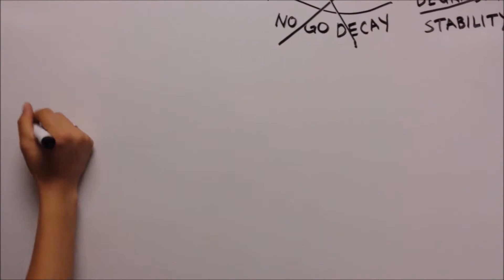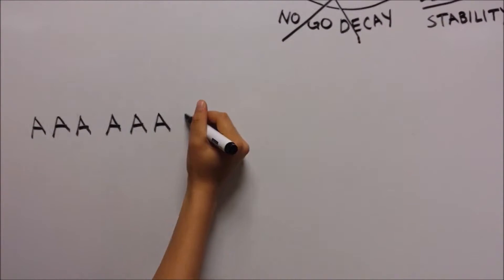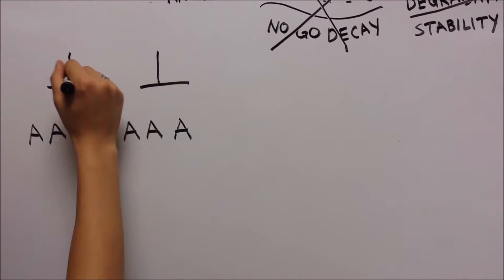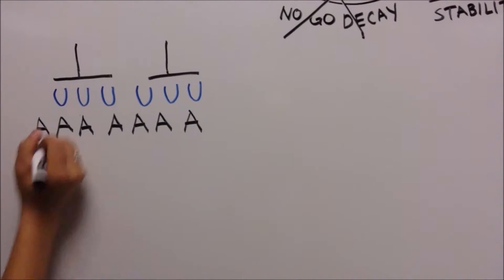Instead, they found that poly-A sequences make ribosomes slip back by one base and continue to translate mRNAs in the minus-1 frame.